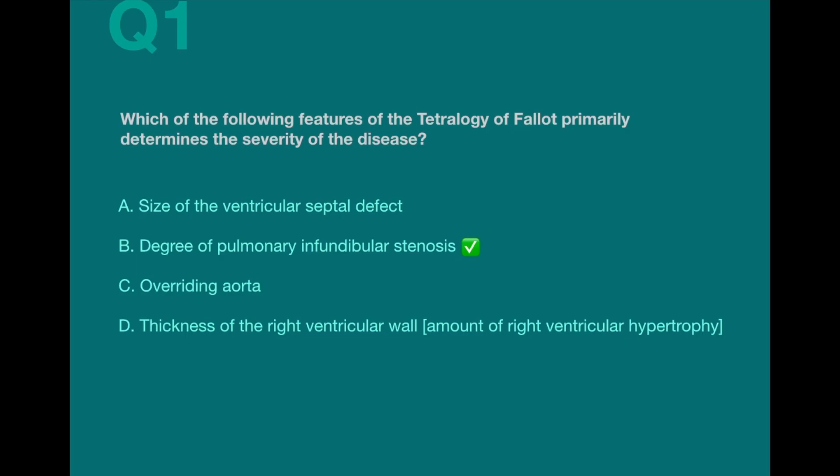Although the other three options are features of the Tetralogy of Fallot, they aren't direct indicators of the severity because they are all dependent on the degree of stenosis of the pulmonary outflow tract. Let me show you how.